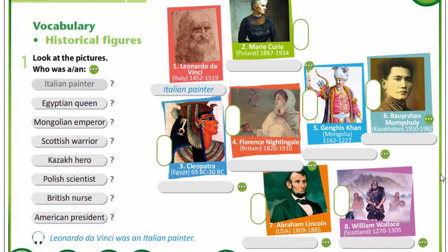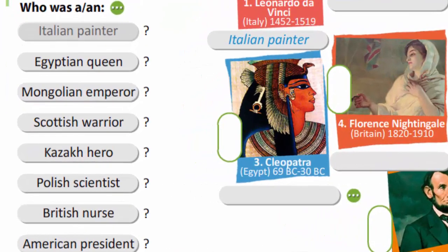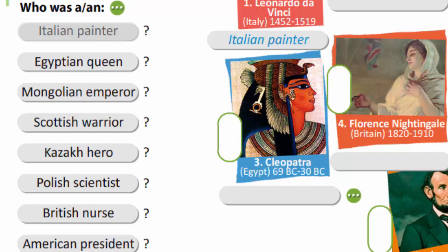Now let's look at the pictures of historical figures and say, please, who was an Italian painter, an Egyptian queen, a Mongolian emperor, a Scottish warrior, a Kazakh hero, a Polish scientist, a British nurse, an American president.